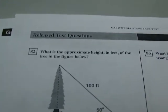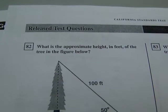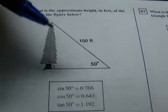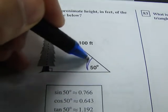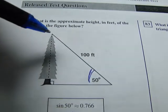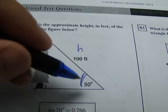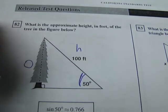Moving on to number 82. What is the approximate height in feet of the tree in the figure below? So we've got this angle here. 50 degrees. And we've got 100 feet for our hypotenuse. And we want to find the height. Well the height from there is called the opposite.